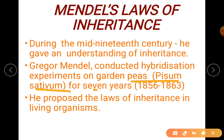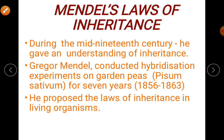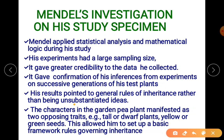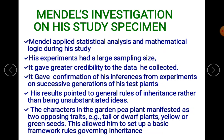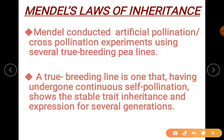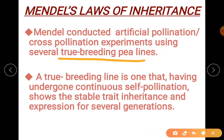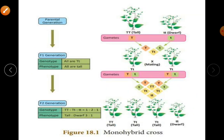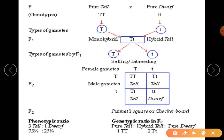Mendel studied Pisum sativum for seven years and hence gave the laws of inheritance in living organisms. These are positive credits to his data and study, which are now a basic acceptance. We need this basic idea to understand genetics. He used both statistics and biology to make the idea clear. He crossed true breeding P lines — when I say true breeding P lines, I am talking about pure, that is homozygous.